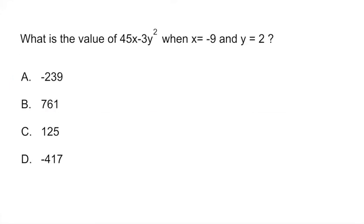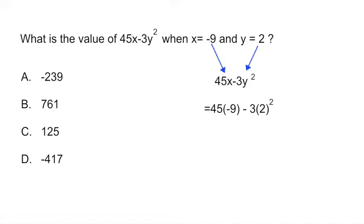Let's look at question 2. It asks: what is the value of 45x minus 3y squared when x equals negative 9 and y equals 2? You take those numbers and plug them into your equation, so it becomes 45 times negative 9 minus 3 times 2 squared. Don't forget that in mathematical operations we have to follow order of operations — I will leave a video at the end of this video so you can review that.